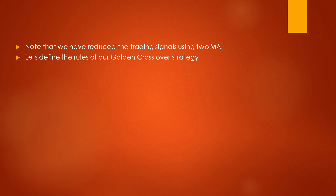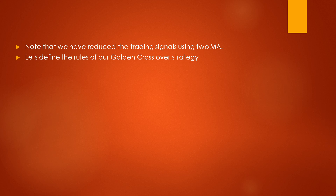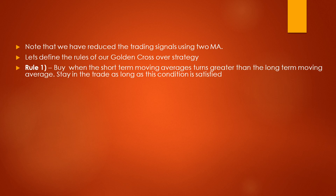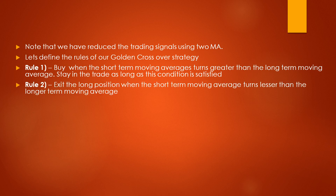Now we are perfectly placed to generalize the rules of our golden crossover strategy. Rule number one: buy when the short-term moving average turns greater than the long-term moving average. But most importantly, stay in the trade as long as this condition is satisfied. Rule number two: exit the long position when the short-term moving average turns lesser than the long-term moving average.